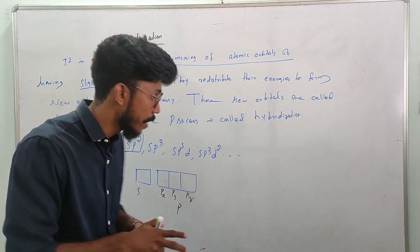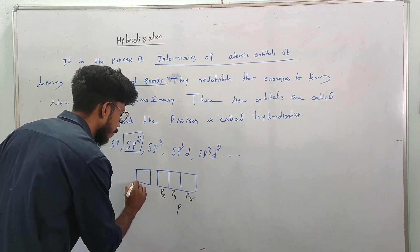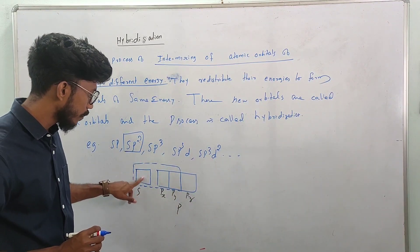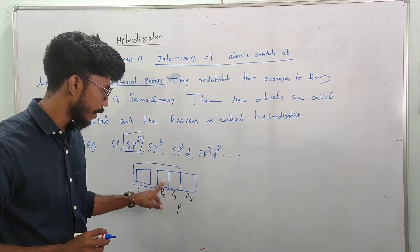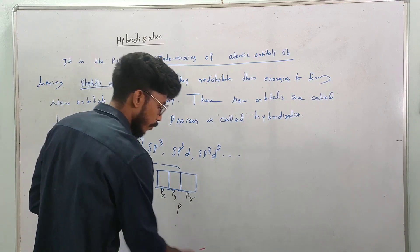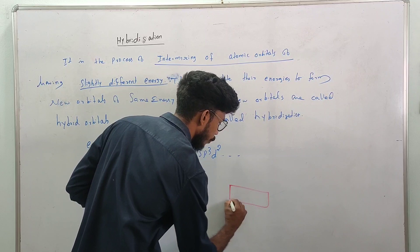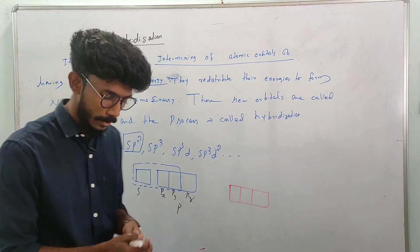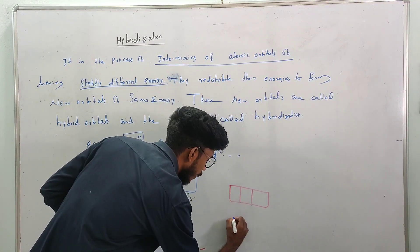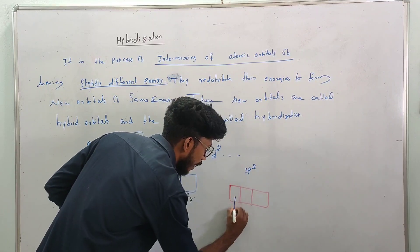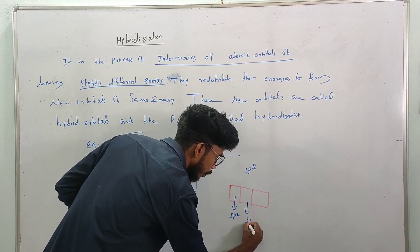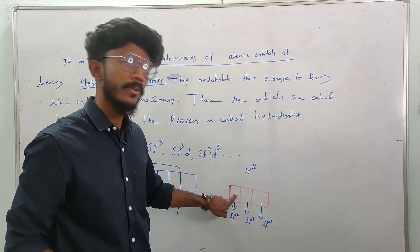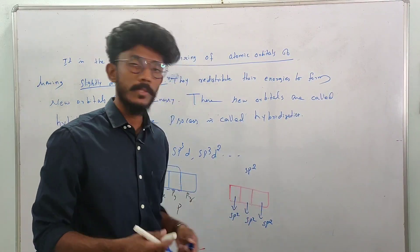We form new orbitals by combining 1s and 2p. It forms different orbitals — this is called sp2 hybridization. The new orbital formed is called the sp2 hybrid orbital.